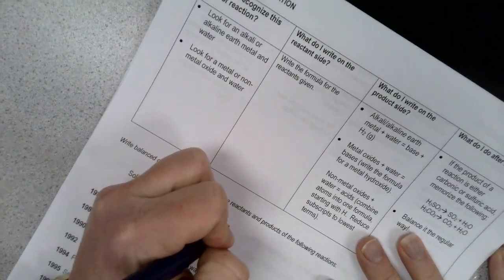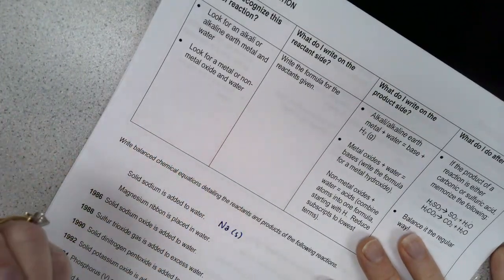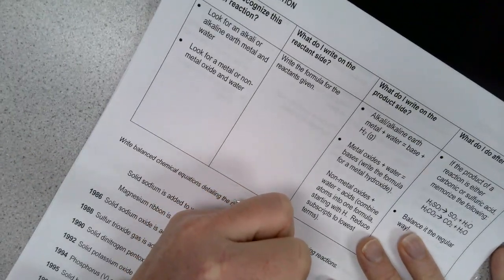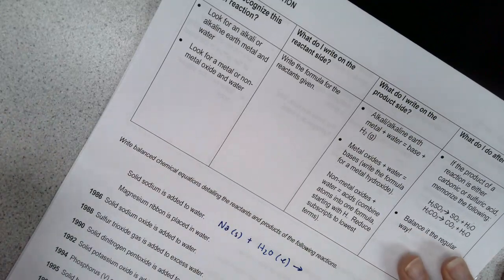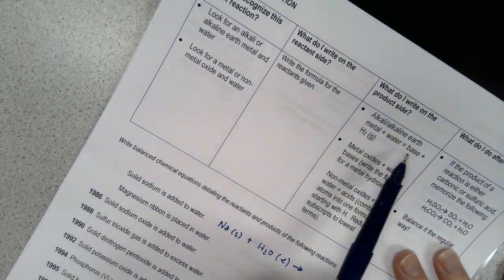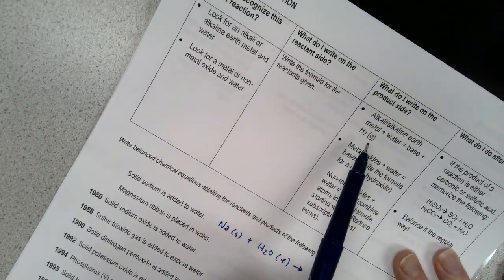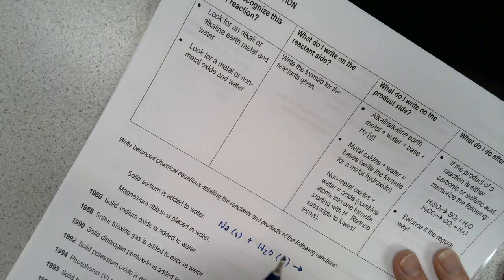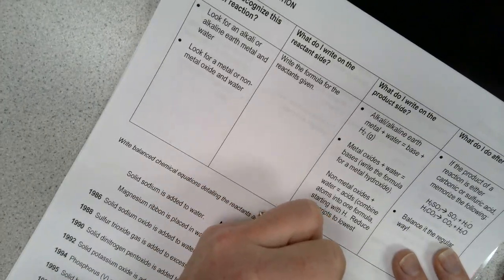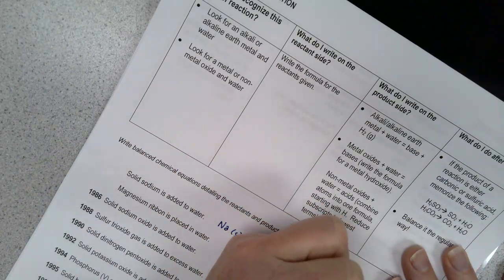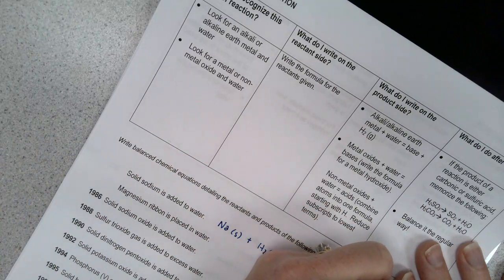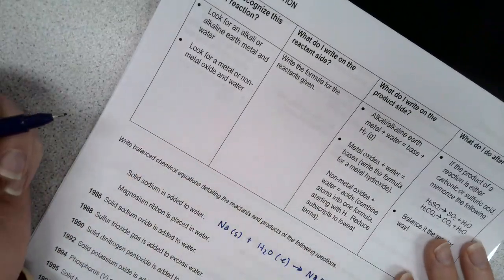So that's going to be Na(s) added to water, H2O liquid, and reacts to form... and we're going to predict the products. So because that's an alkali metal with water, an alkali metal with water makes a base in water. So base means the hydroxide, right? So this becomes NaOH and they both have a one charge, so that's it. Sodium hydroxide aqueous plus, what else do you think?